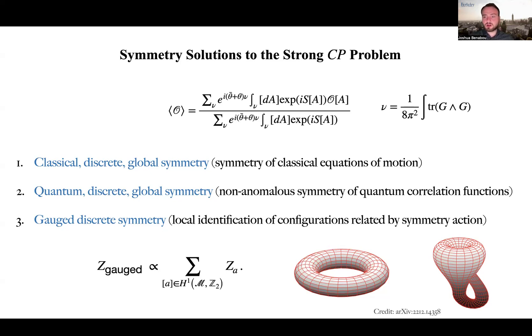In our paper, we argue, as in the standard theory, that in physical observables, theta and theta bar always appear in the combination theta plus theta bar. And so we can absorb theta into theta bar.